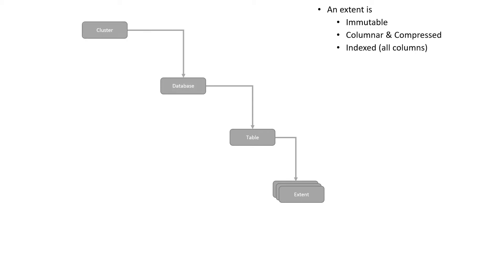A key characteristic of extents is that they are immutable, and that's actually one of the biggest strengths of Azure Data Explorer as an analytic platform. Because the extents are immutable, it allows Data Explorer to do a lot of optimization — it doesn't need read or write logs on them. They are also columnar, meaning data is stored in columns and compressed, and columnar format allows for better compression.